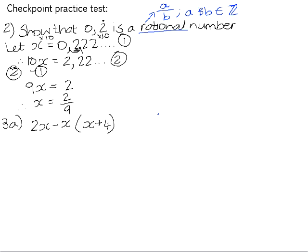And we have now shown that 0.2 recurring is a rational number because it can be written as an integer divided by an integer.